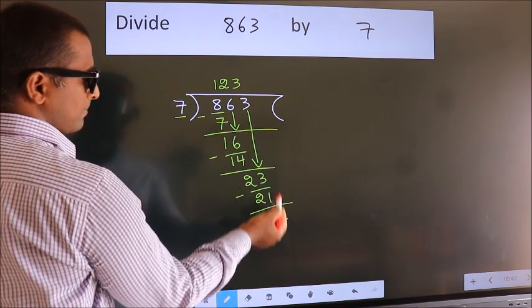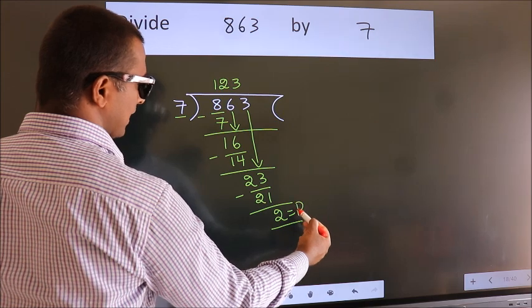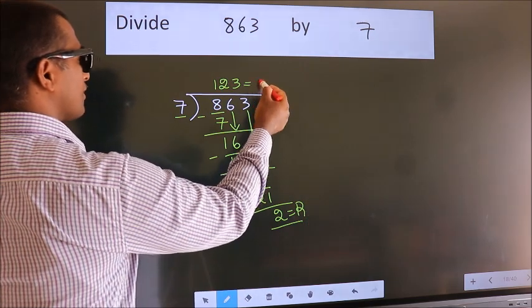No more numbers to bring down. So we stop here. This is our remainder. This is our quotient.